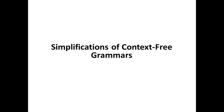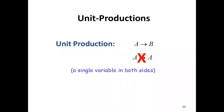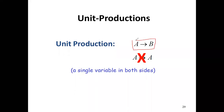Dear students, today we will discuss the simplification of context-free grammars. We need to know how to remove unit productions. A unit production is any production of the form A to B, where A and B both belong to the set of variables. We need to remove this type of production from our production set, including the case A to A.